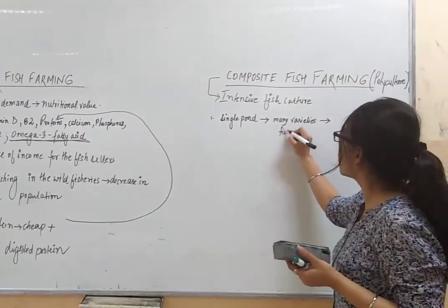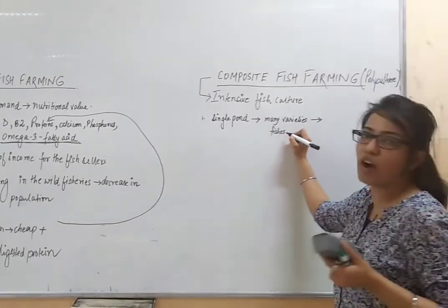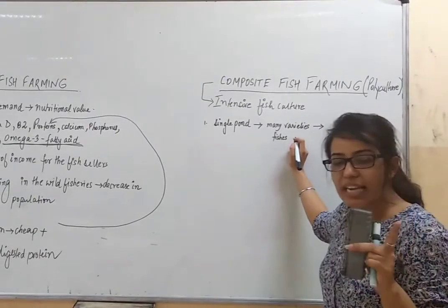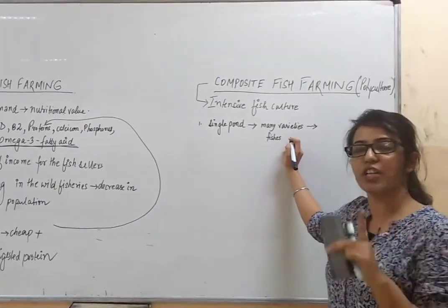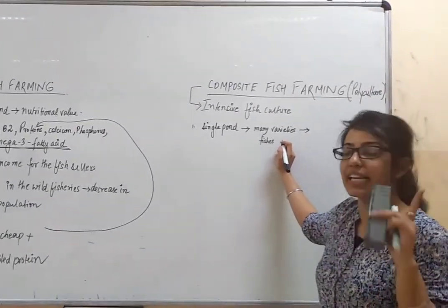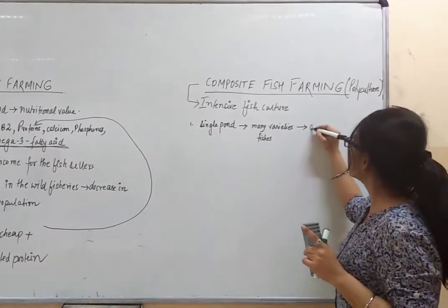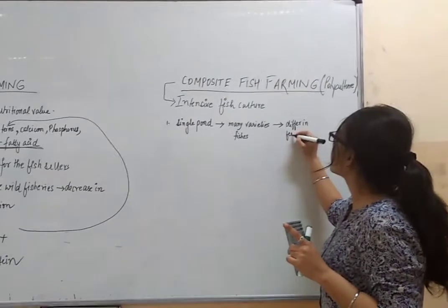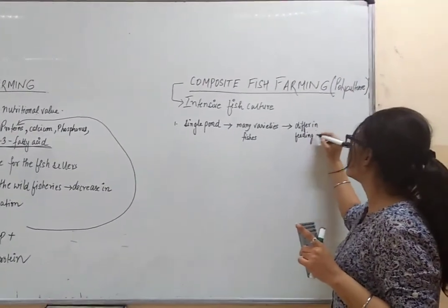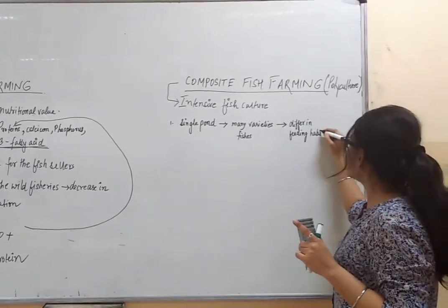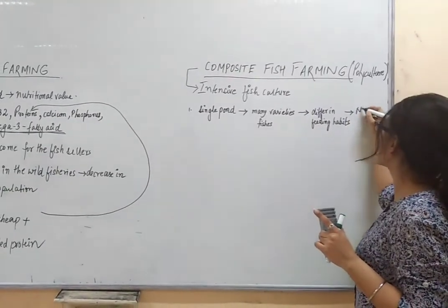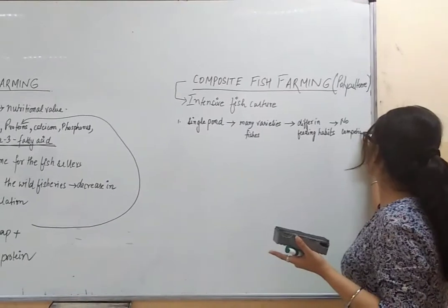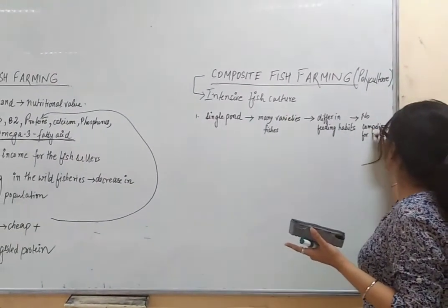With many varieties of fishes in a single pond, there could be competition for food. However, that does not happen because fishes are specifically chosen which differ in their feeding habits. Since their feeding habits are different, they are compatible with each other and there is no competition for food.